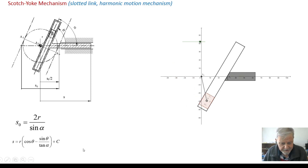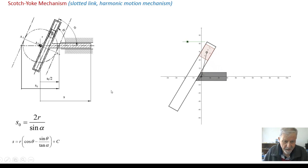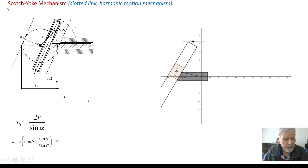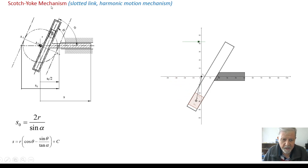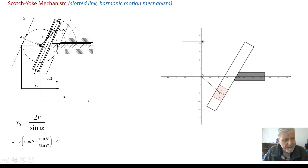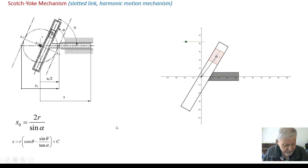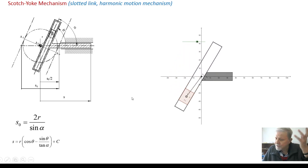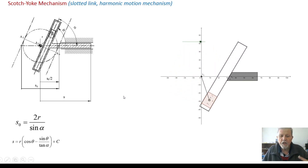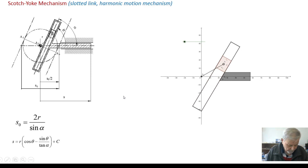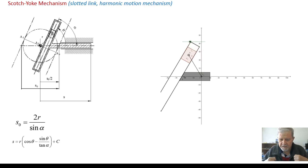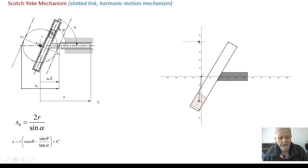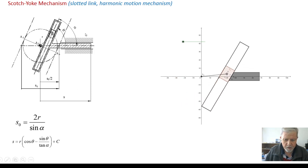The slotted link refers to the slot in the mechanism — that is the Scotch-yoke mechanism. As for the name 'Scotch yoke,' I believe it comes from an English similarity with the word 'yoke' — the yoke used to run oxen on a cart.